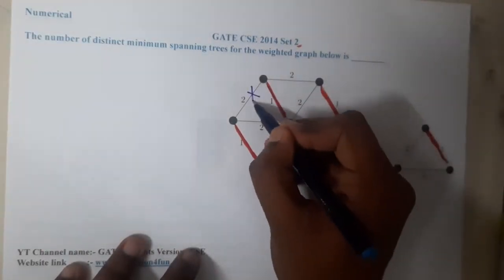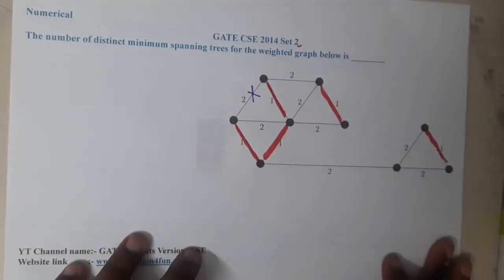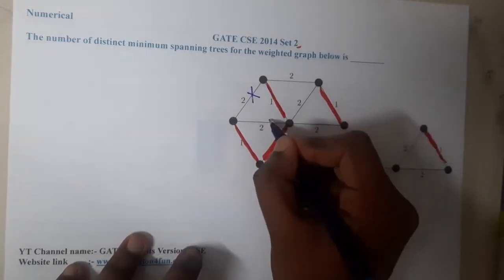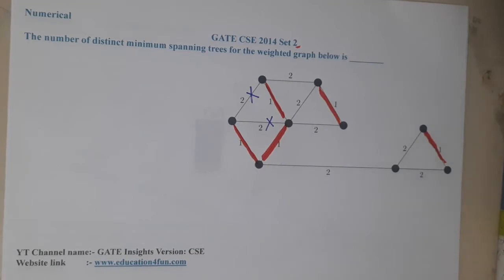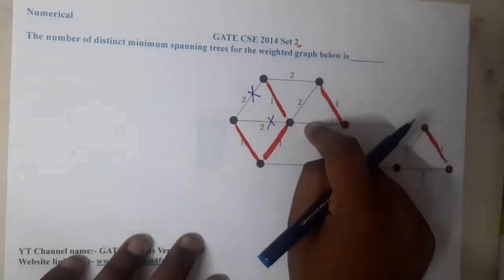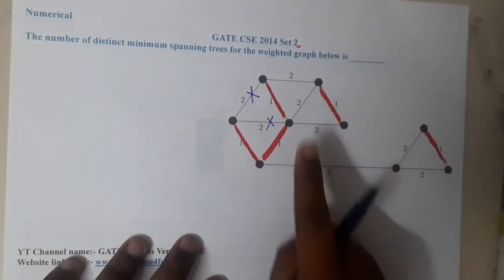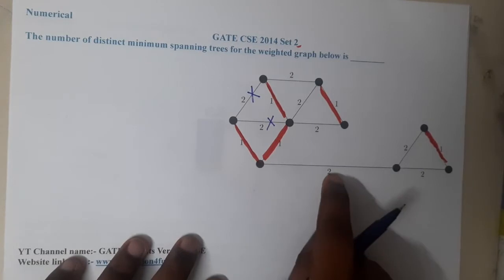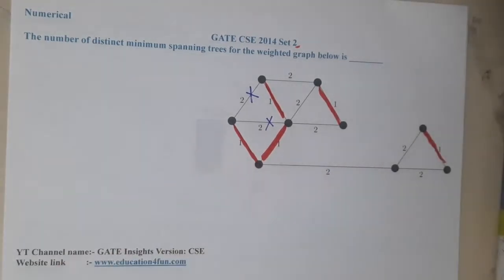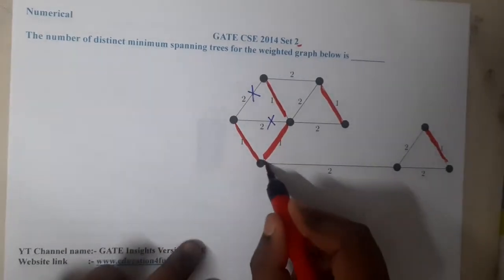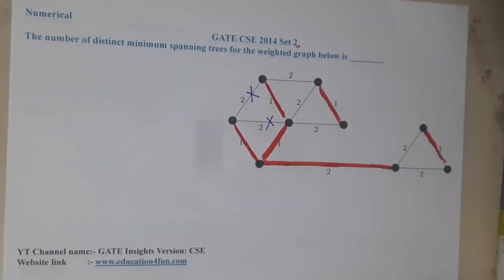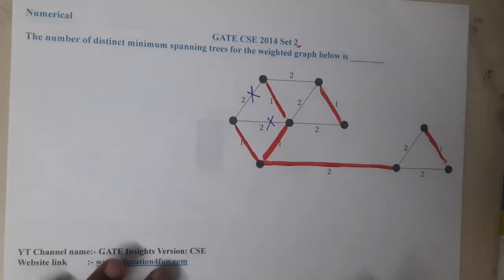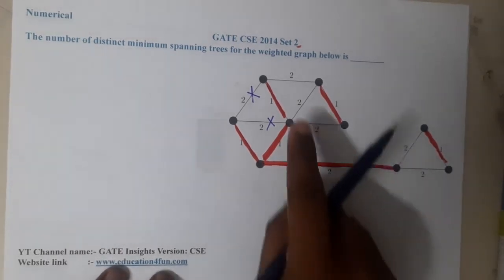One thing to observe is that this particular edge with value two cannot be taken because it will form a loop. Similarly, this other edge with value two also cannot be taken because that will also form a loop. Among the remaining three edges with value two, I can take any one. Also, this bridge edge must be included to build a spanning tree — even if its cost were ten thousand or one lakh, we would still have to take it.